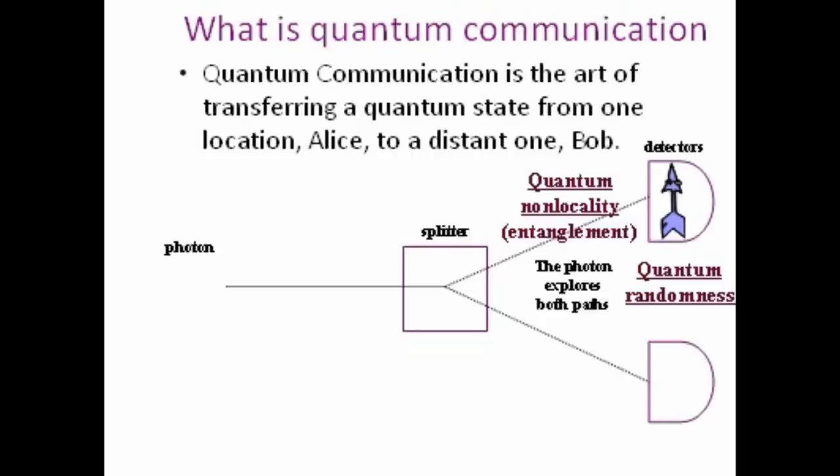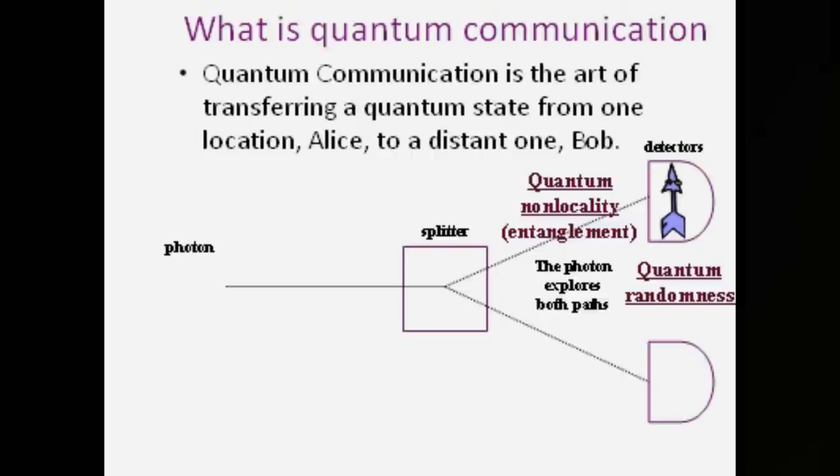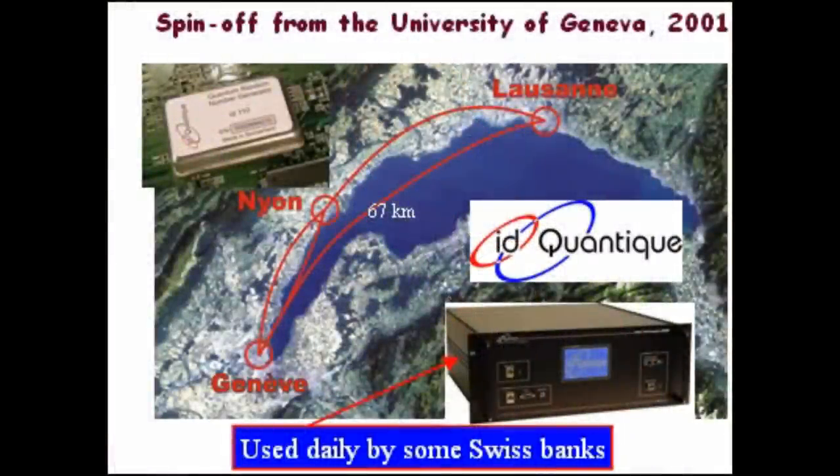This is something which is now well mastered from a scientific point of view and there are already some applications. For instance, ID Quantique — a spin-off of our university, ten years old — produces a quantum random number generator that is four centimeters in size. And that's how Alice and Bob look like.